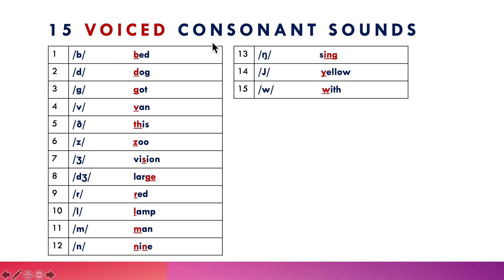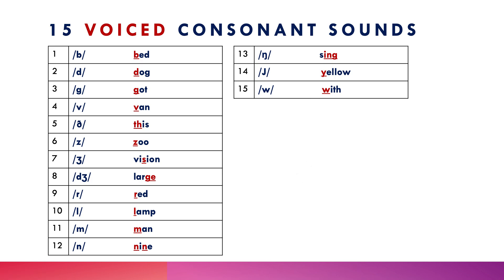The 15 voiced consonant sounds are: /b/ as in bed, /d/ as in dog, /g/ as in god, /v/ as in war, /r/ as in ran, /ð/ as in this, /z/ as in zoo, /ʒ/ as in vision, /dʒ/ as in large, /r/ as in red, /l/ as in lamp, /m/ as in man, /n/ as in nine, /ŋ/ as in sing, /j/ as in yellow, and /w/ as in with. Whenever you pronounce these sounds, your vocal cords vibrate.